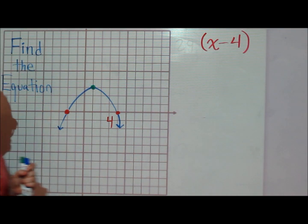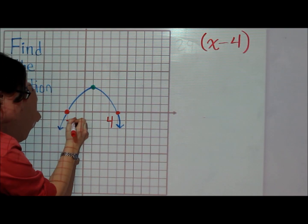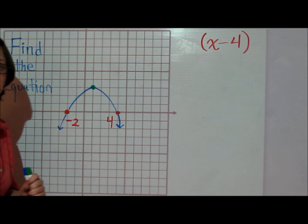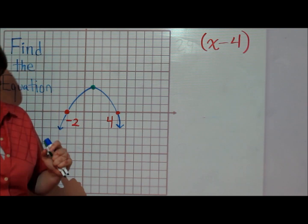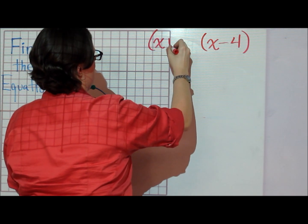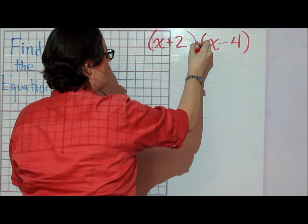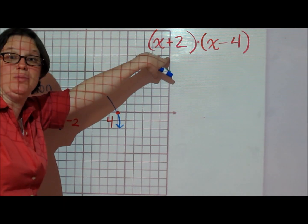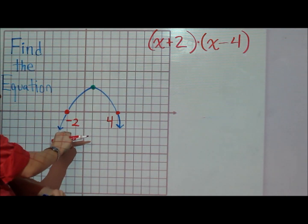There's also an x-intercept at negative 2. That tells me that there's a factor of x plus 2, because x plus 2 becomes 0 when negative 2 is plugged in.